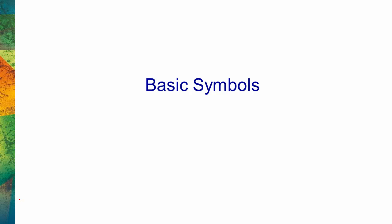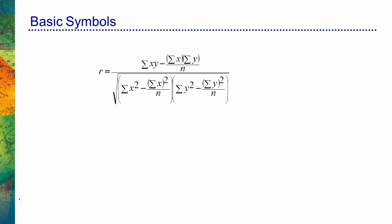Let's first get started by learning some basic symbols. In this particular example, we see a formula for computing a Pearson correlation coefficient, which is a very common statistic and something typically covered in basic introductory statistics courses. What we see here is that, in general, there are no numbers — we see many sigma symbols, and we also see some other variables represented with letters like x and y.